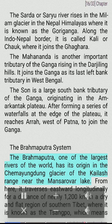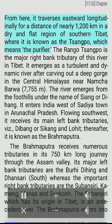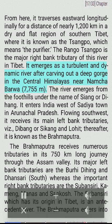The Brahmaputra system: The Brahmaputra, one of the largest rivers of the world, has its origin in the Chemayungdung glacier of the Kailash range near the Mansarovar Lake. From here it traverses eastward longitudinally for nearly 1,200 km in a dry and flat region of southern Tibet, where it is known as the Tsangpo, meaning 'the purifier.' The Rango Tsangpo is the major right bank tributary in Tibet. It emerges as a turbulent river after carving out a deep gorge in the central Himalayas near Namchabarwa (7,755 meters), entering India west of Sadiya town in Arunachal Pradesh under the name Siang or Dihang.